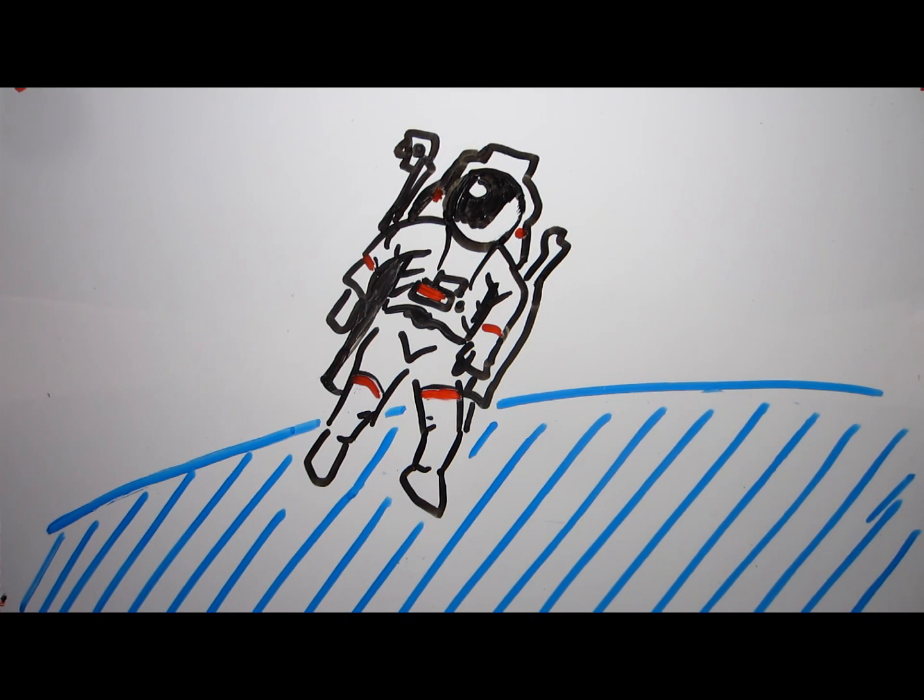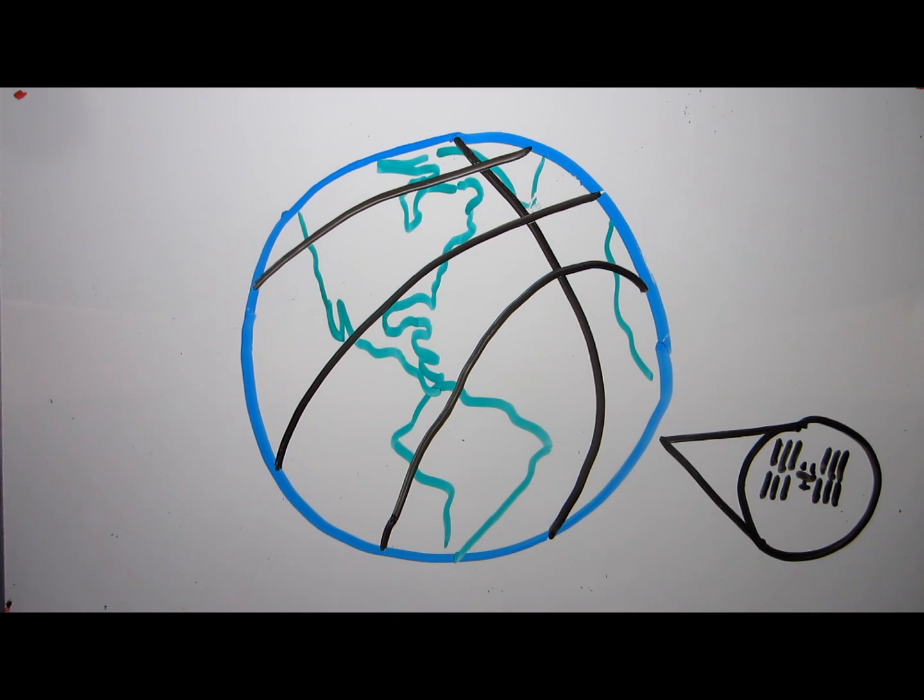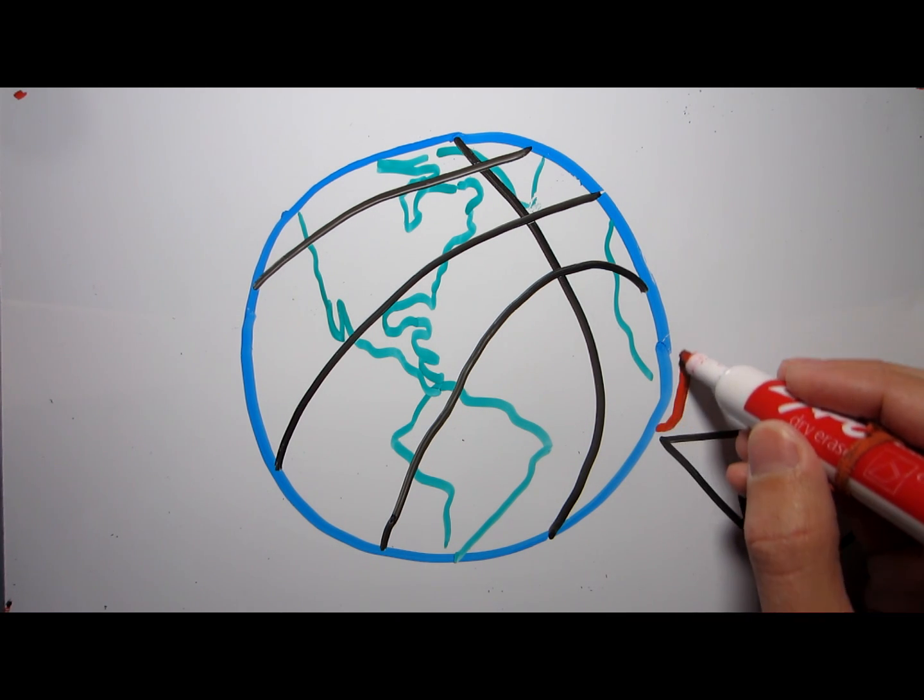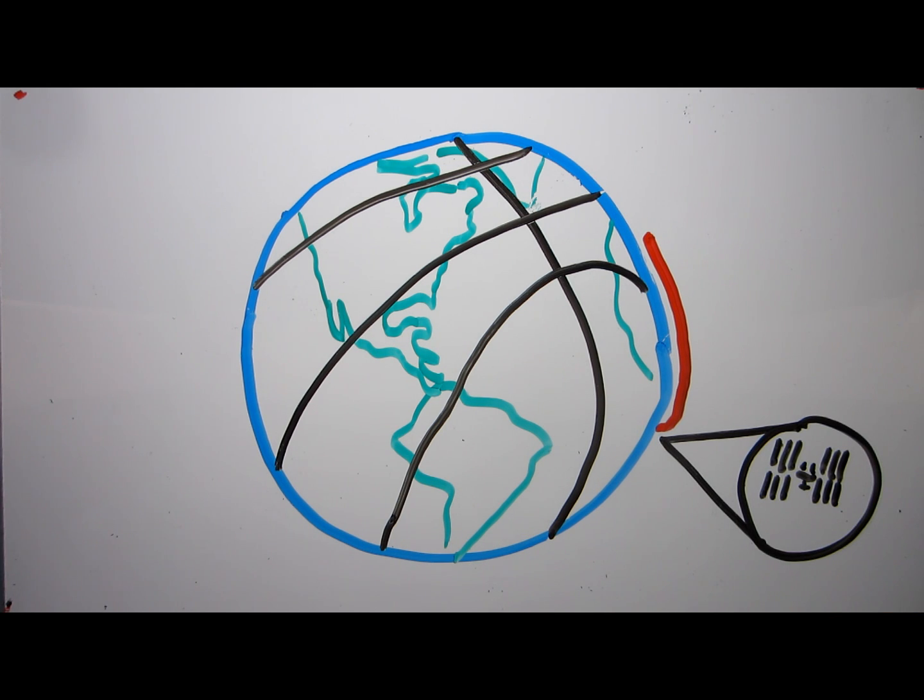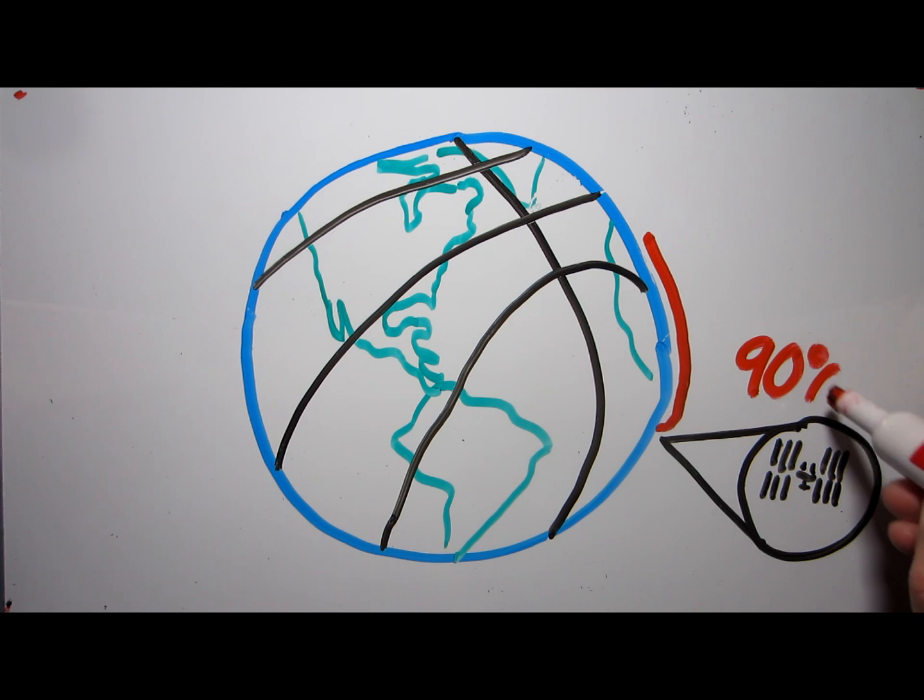Everyone knows that astronauts experience weightlessness in orbit, but gravity affects objects at even infinite distances, and astronauts aren't even that far away. If the Earth were a basketball, the International Space Station would be orbiting a little more than a half a centimeter above its surface. In fact, astronauts are affected by 90% of the strength of Earth's gravity we feel on its surface. So what gives?